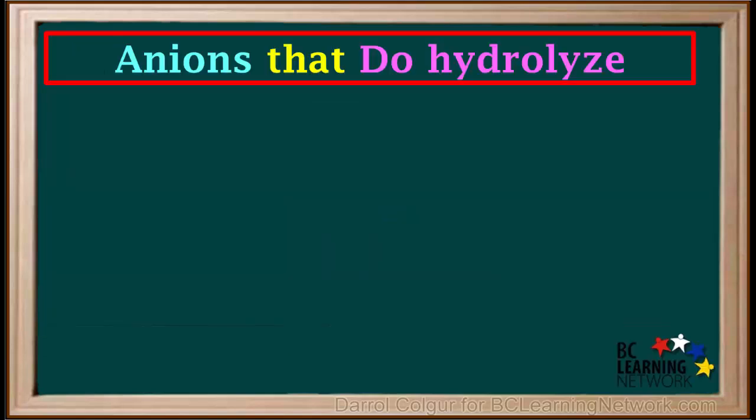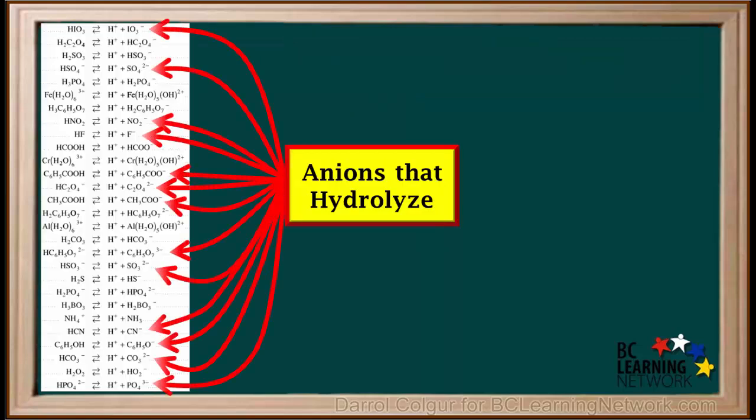Now that we've seen which anions do not hydrolyze, we'll now look at the anions that do hydrolyze, or undergo hydrolysis. In this video, we'll deal only with the anions that are not amphiprotic. In other words, their formulas do not begin with an H. They are shown here on the right side of the acid table. We'll deal with hydrolysis of amphiprotic anions in another video.